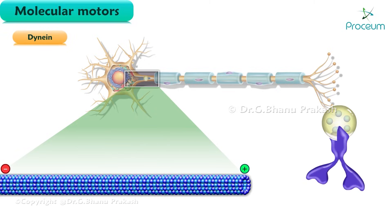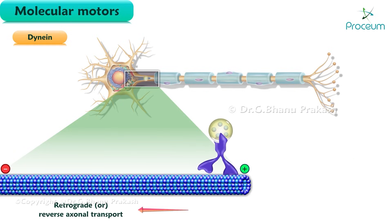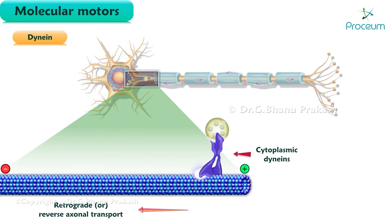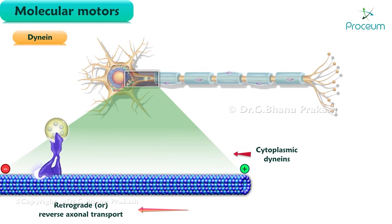Next, we will cover dynion. Dynions have two heads with their neck pieces embedded in a complex protein. Dynions are involved in retrograde or reverse axonal transport. There are different forms of dynions. The first is cytoplasmic dynions, which act like conventional kinesins except they tend to move particles towards the minus end of the microtubules.